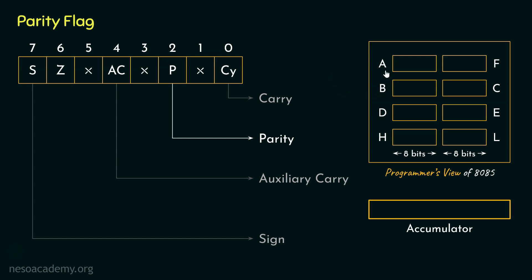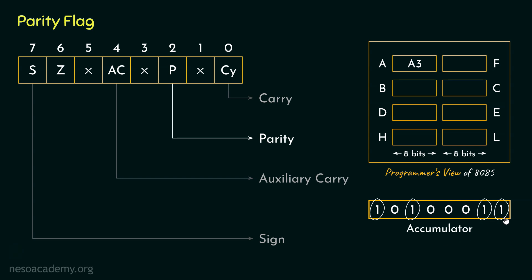Say, after an operation, the accumulator contains the value A3 hex. Within the accumulator it is stored as binary: 3 is 0011, and A is 1010. Counting the number of ones: 1, 2, 3, 4 — that's an even number. So when the number of ones in the accumulator is even, the parity flag is going to be set.